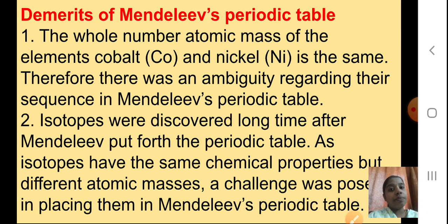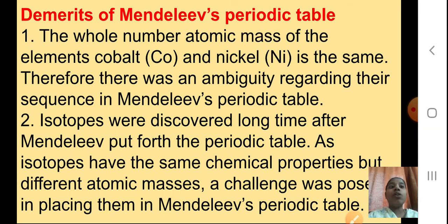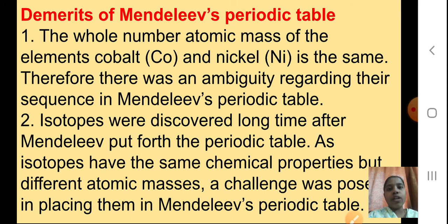Now the demerits of Mendeleev's periodic table. The whole number atomic mass of the elements cobalt and nickel is the same, so there was an ambiguity regarding their sequence in Mendeleev's periodic table. When the atomic masses of two elements are similar, placing them in increasing or decreasing order cannot be done properly — that was one of the demerits.